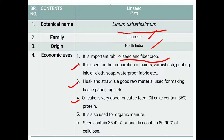Oil cake is very good for cattle feed. Oil cake contains nearly about 36% protein — that means it is a concentrated feed used for feeding animals. It is also used as an organic manure, that means as a concentrated organic manure.